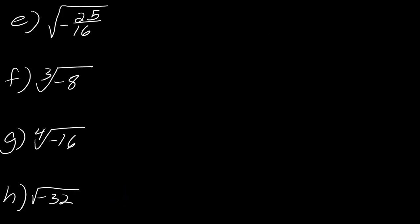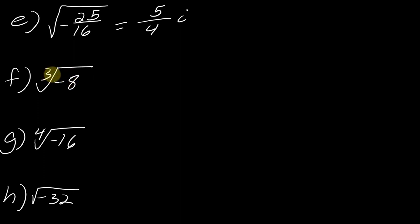Let's try a couple more. For the first one: the square root of 25 is 5, the square root of 16 is 4, and because there's a negative underneath, this is going to be 5 over 4i. Now these last three are there to make you think, because sometimes people try to use i everywhere — that's not what you're supposed to do. In the case of the cube root of negative 8, we don't need i for this. We know that negative 2 times negative 2 times negative 2 gives negative 8, so this is just straight up negative 2.